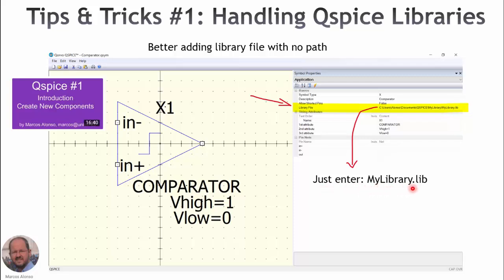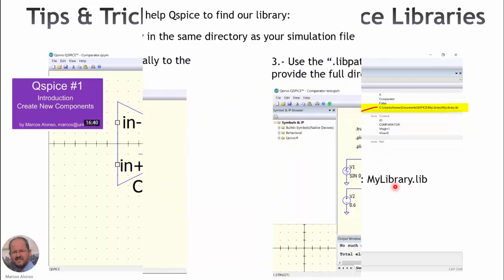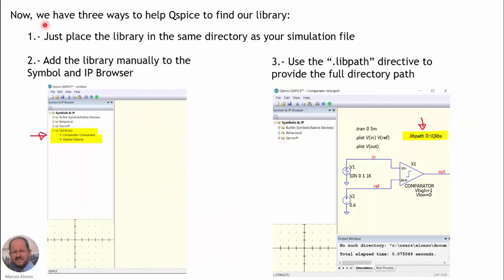It is better to enter just the name of the library without the path, and then instruct QSPICE so the program can find the location of our library. Here are three ways to help QSPICE find our library. The first one is simply by placing our library in the same directory as our simulation file.